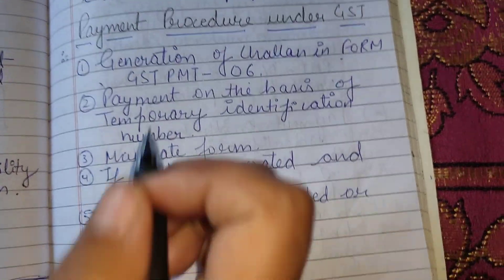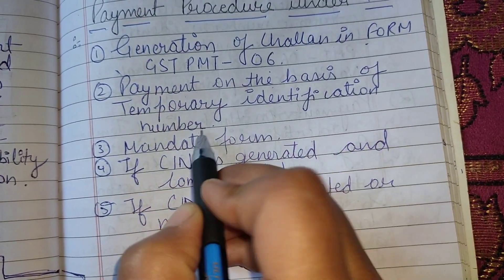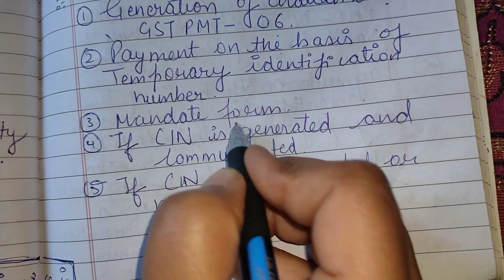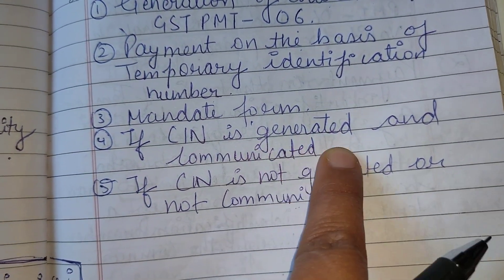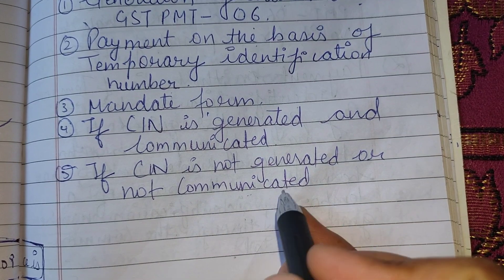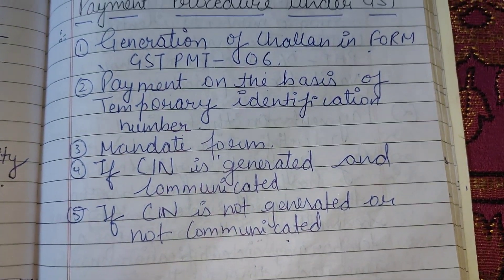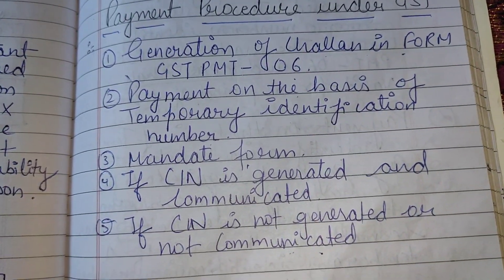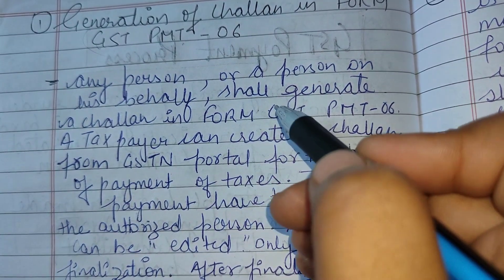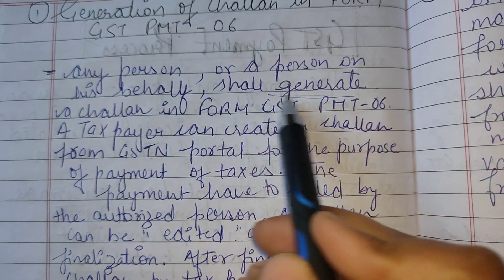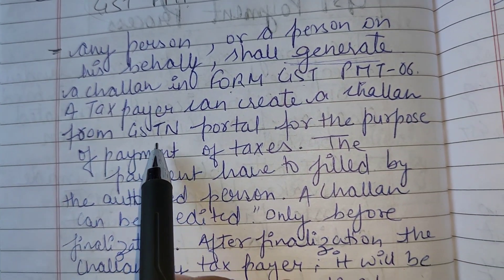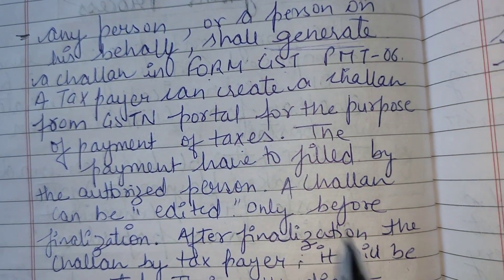The chalan is generated in the form of GST PMT 06. Any person, or a person on their behalf, shall generate a chalan in the form of GST PMT 06. A taxpayer can create a chalan from the GST portal for the purpose of payment of taxes.